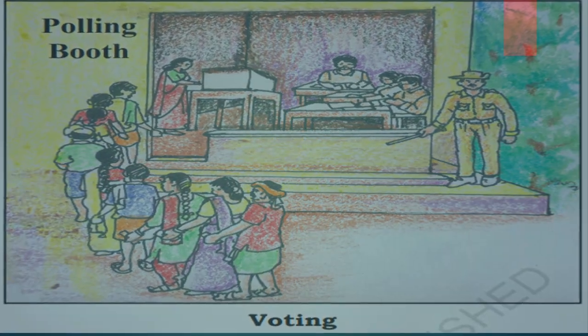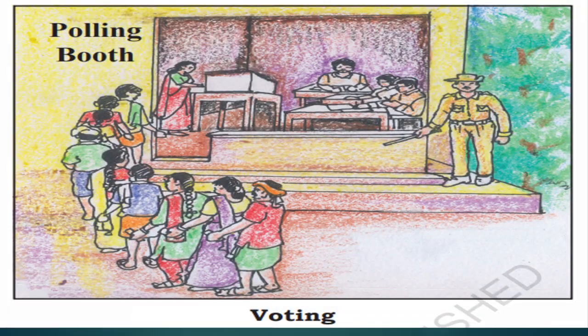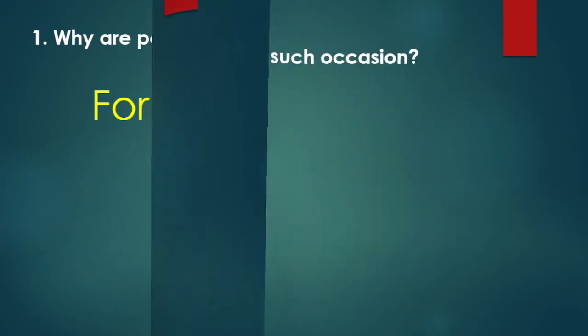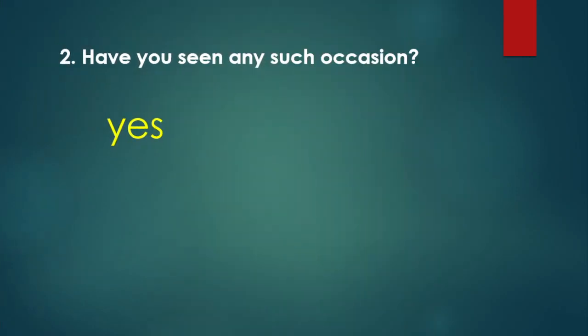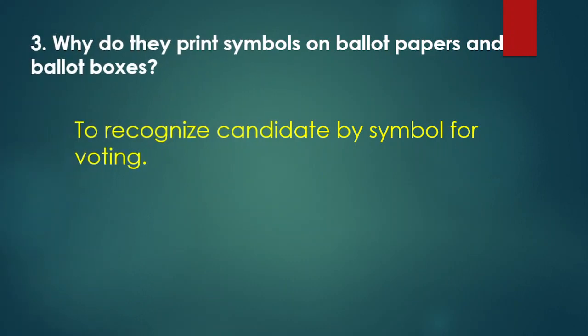Polling booth and voting. Question one: why are people moving in a line? For voting. Question two: have you seen any such occasion? Yes. Question three: why do you print symbols on the ballot paper and the ballot boxes? To recognize the candidate by symbol for voting.